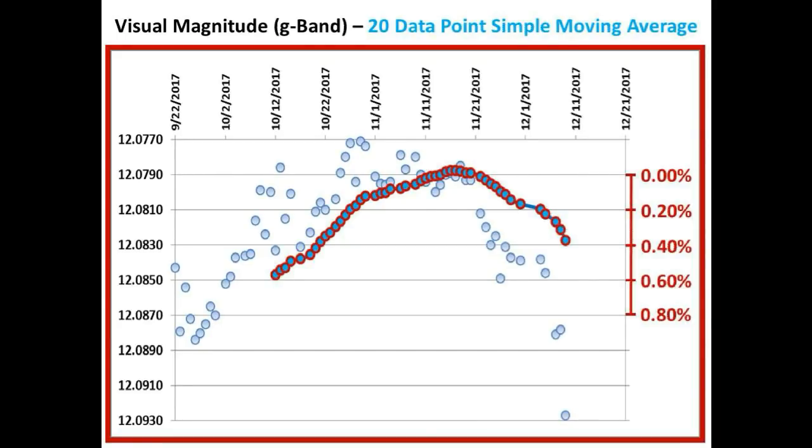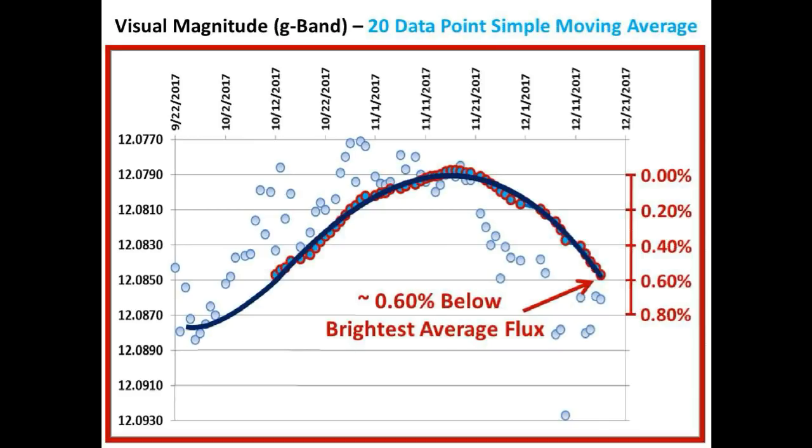So let's move forward in time to the present date by adding Bruce Gary's G-band measurements to this and also advancing the corresponding 20 data point simple moving average curve. The best fit curve is shown here, and we are now down approximately 0.6% below the highest flux level reached back on November 16th.